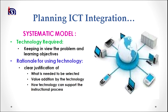The third stage in the systematic model is determining what kind of technology needs to be integrated into the teaching-learning situation. Keeping in view the problem and learning objective, we can select the suitable technologies to be integrated. The fourth point is the rationale for using technology — we need to clearly justify what technology is selected, what value addition it will bring, and how the selected technology can support the instructional processes.